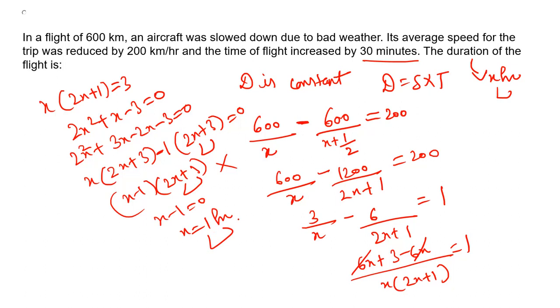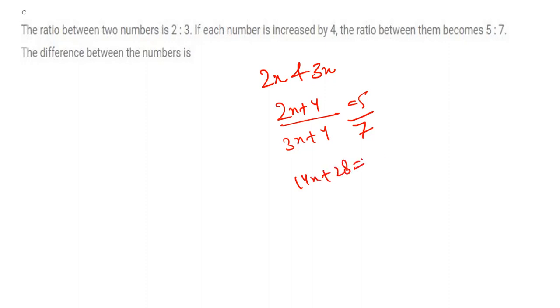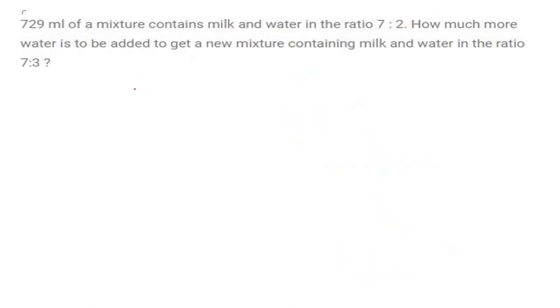Next question: the ratio between two numbers is 2:3. Let the numbers be 2x and 3x. If each is increased by 4, the ratio becomes 5:7. Cross-multiplying: 7(2x + 4) = 5(3x + 4), giving 14x + 28 = 15x + 20, so x = 8. The numbers are 16 and 24, and the difference is 8.